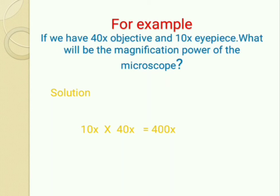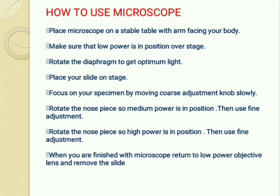When using the microscope, be very gentle. First, place the microscope on the table with the arm facing towards your body. Make sure the low power objective is in position over the stage. Then rotate the diaphragm to get optimum light. After this, place the slide on the stage and focus on your specimen using the coarse adjustment knob slowly.